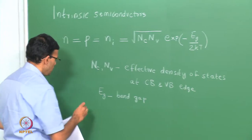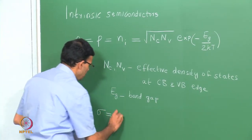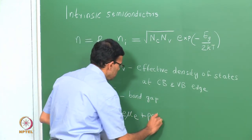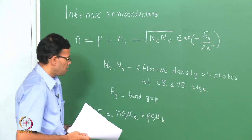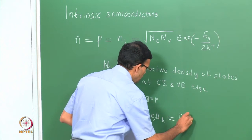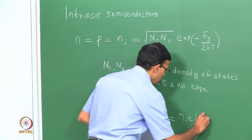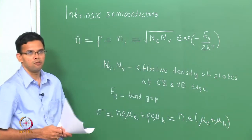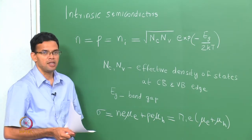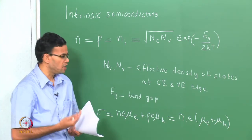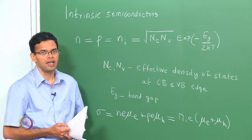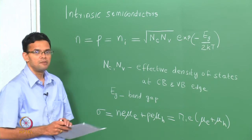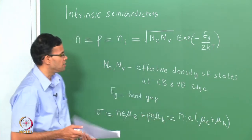We also wrote down an expression for the conductivity sigma as n·e·μe plus p·e·μh. In the case of an intrinsic semiconductor where n equals p, this simplifies using μe plus μh. μe and μh are the mobilities of the electrons and holes — they represent the ease with which electrons can move through the conduction band or holes through the valence band. Higher n or higher mobilities give higher conductivity.